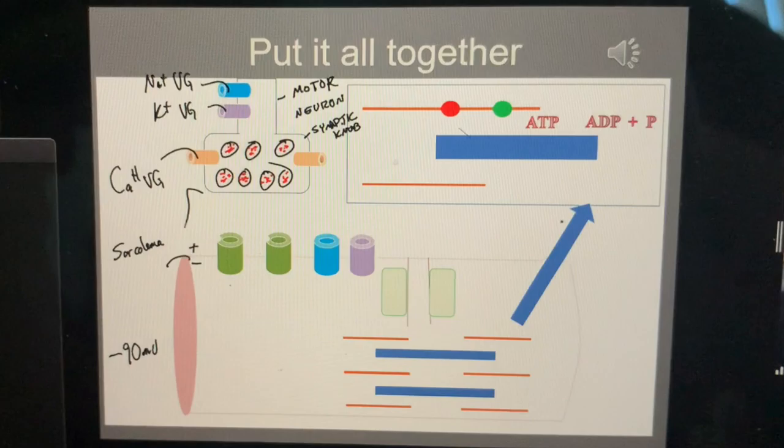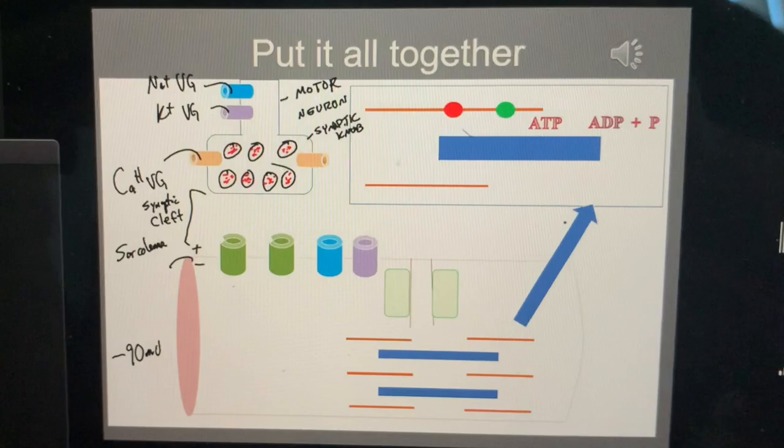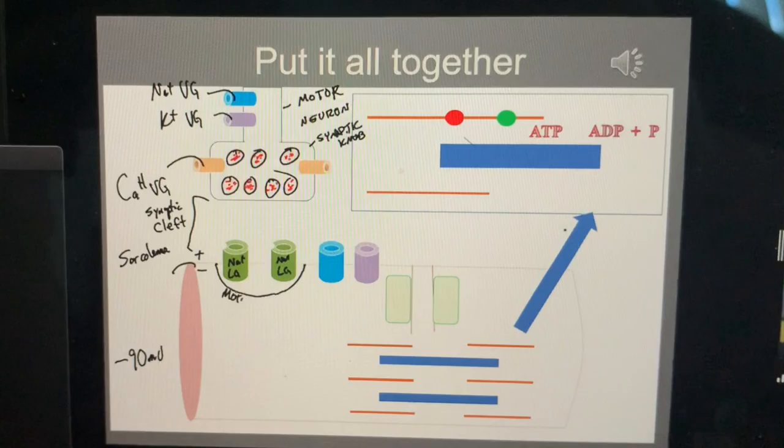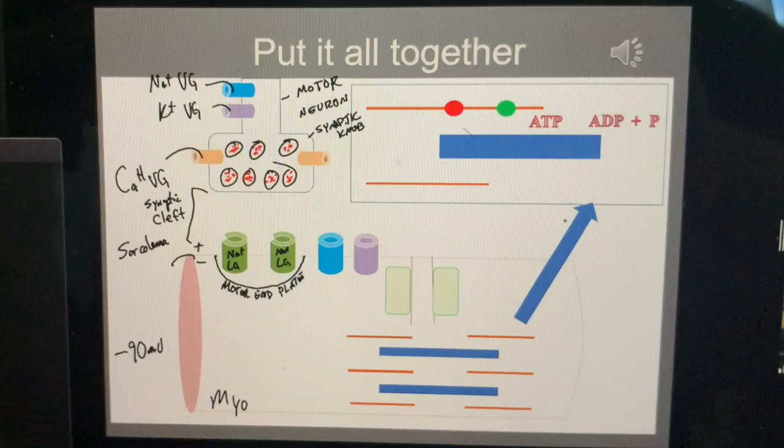At my sarcolemma, there's two m's there, then I have this gap which is called the synaptic - what's it called? Cleft, right. Then I have a sodium ligand-gated channel - how many? Many. And it's at the motor end plate. Oh, that's a good place to label that. This is my myosite.